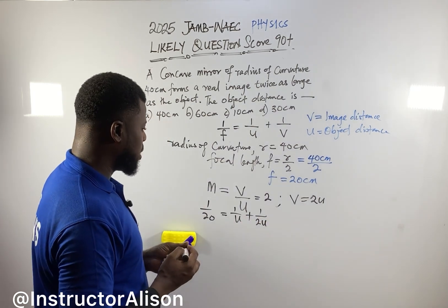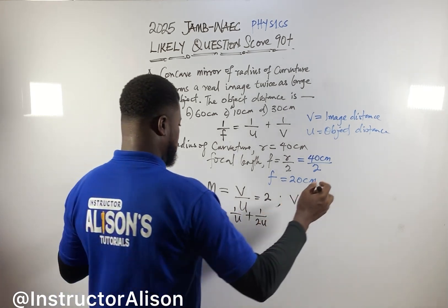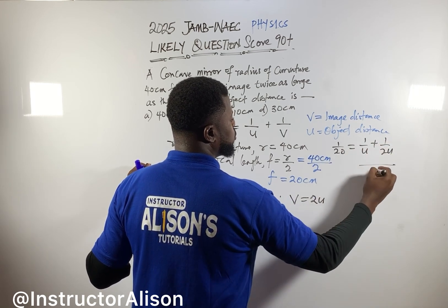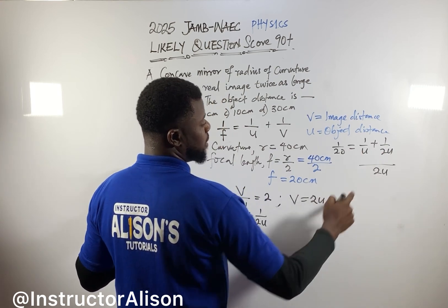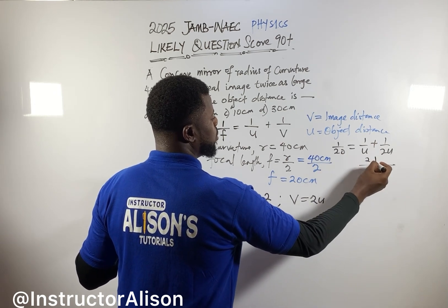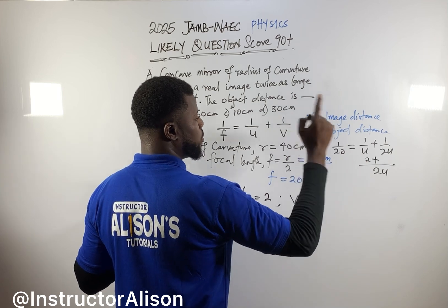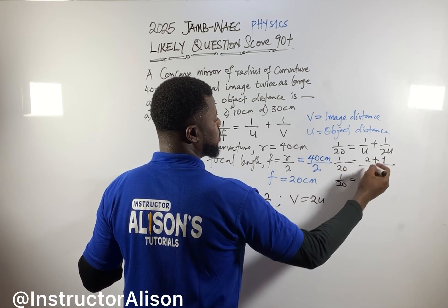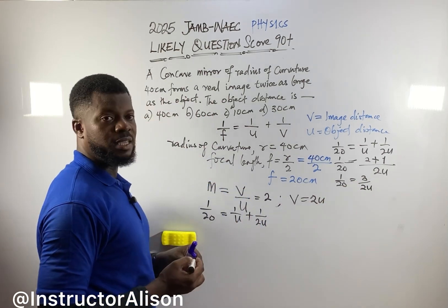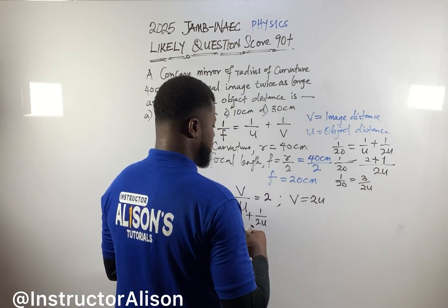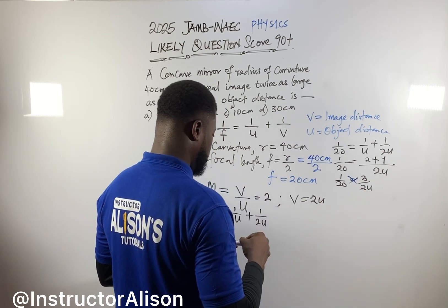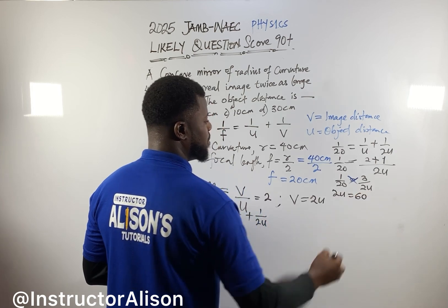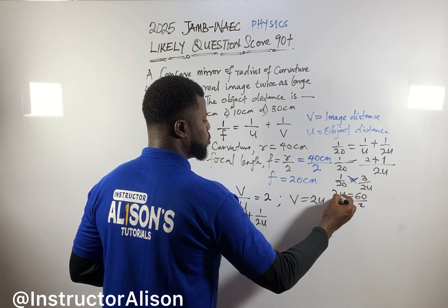Now handle the right-hand side. The LCM of u and 2u is 2u. So 1 over 20 equals 2 over 2u plus 1 over 2u, which gives 3 over 2u. So 1 over 20 equals 3 over 2u. Cross multiply: 2u times 1 equals 20 times 3, giving 2u equals 60. Divide both sides by 2.